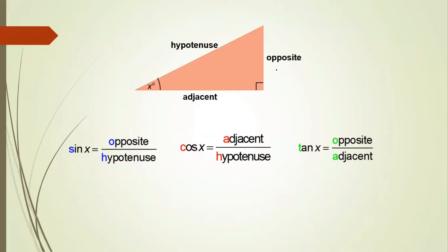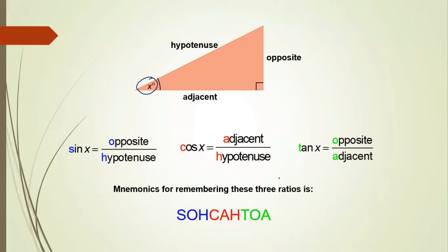So in a right triangle, when we are looking for angle x: sine x is equal to opposite by hypotenuse, cos x is equal to adjacent by hypotenuse, and tan x is equal to opposite by adjacent. The famous mnemonic you can remember is SOH-CAH-TOA: Sine = Opposite/Hypotenuse, Cos = Adjacent/Hypotenuse, Tan = Opposite/Adjacent.